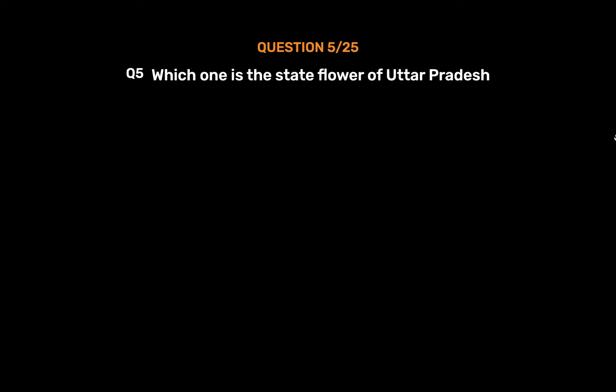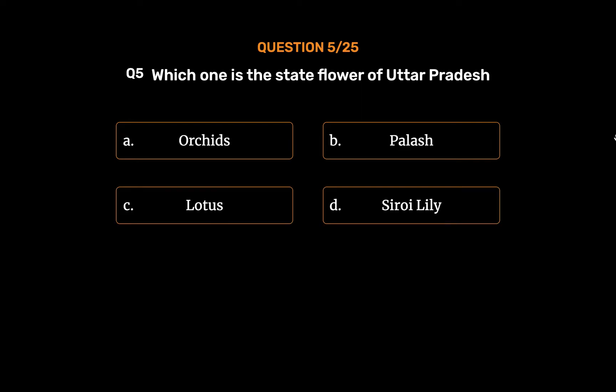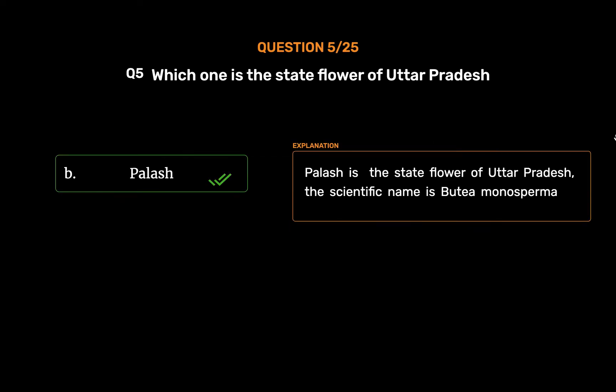Question No. 5: Which one is the state flower of Uttar Pradesh? Option A: Orchids. Option B: Palash. Option C: Lotus. Option D: Siroi Lily. The correct answer is Option B: Palash.